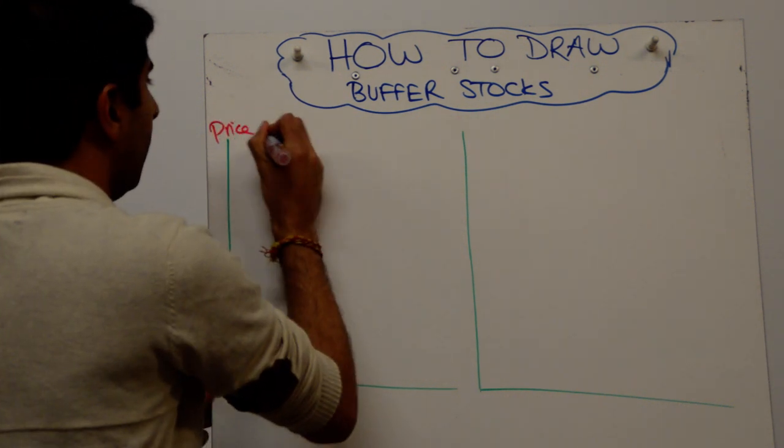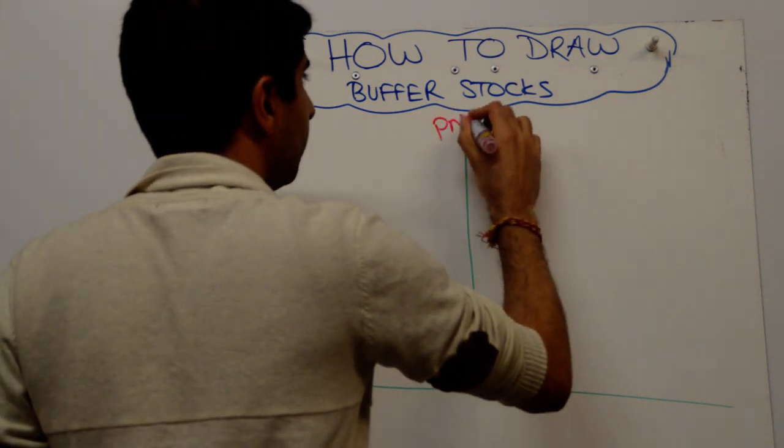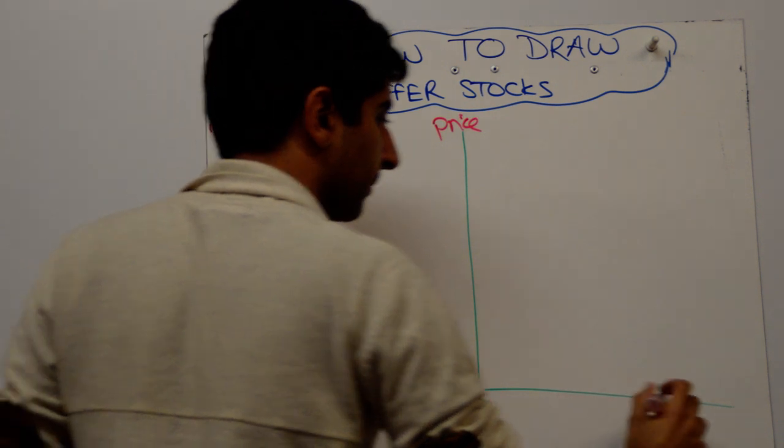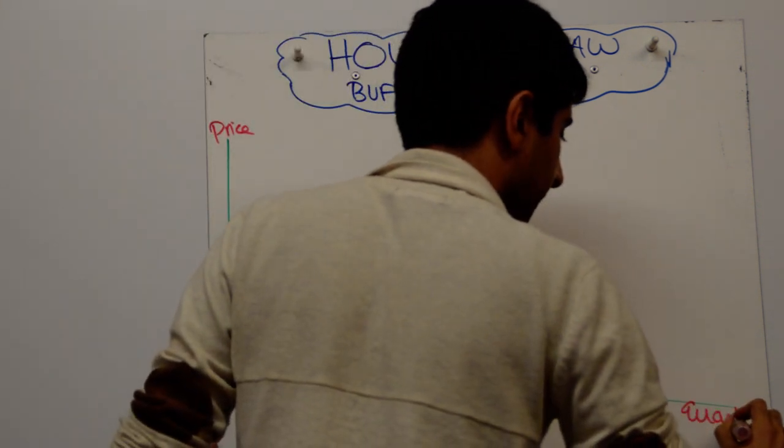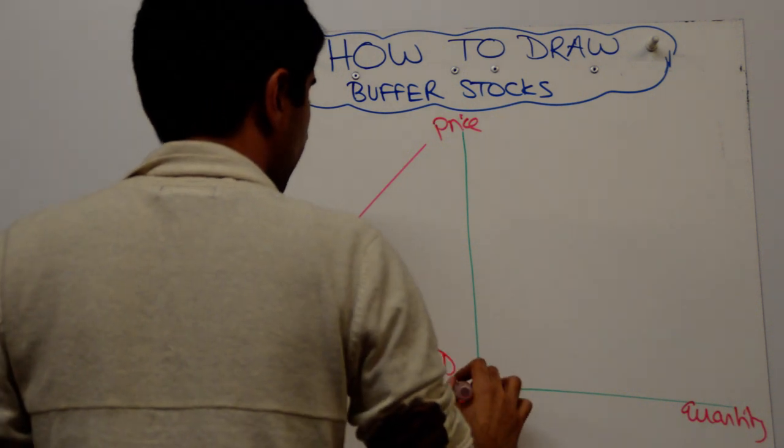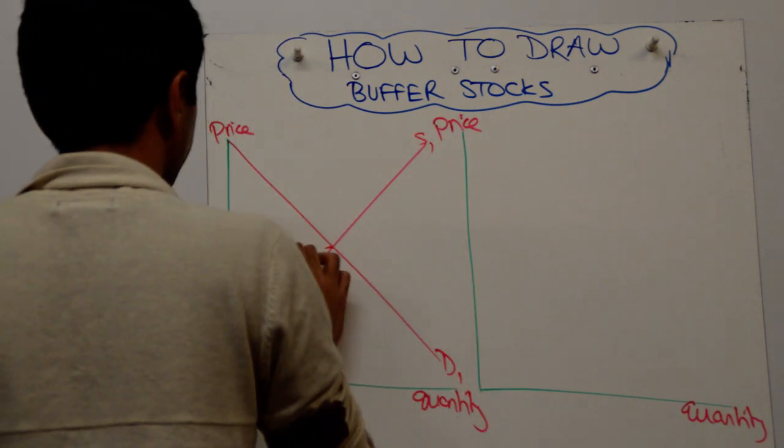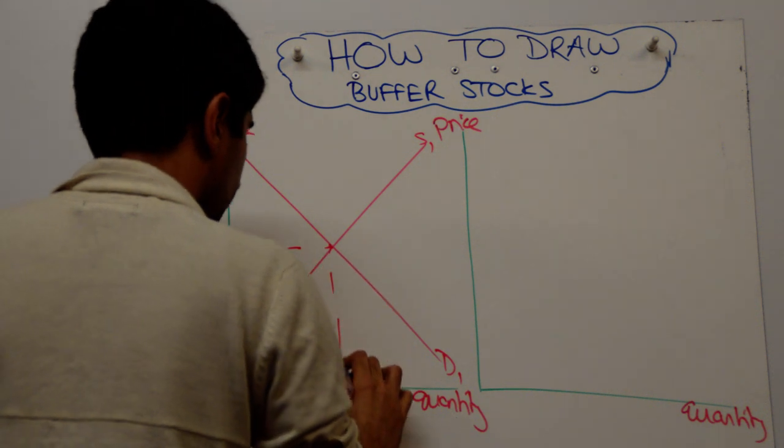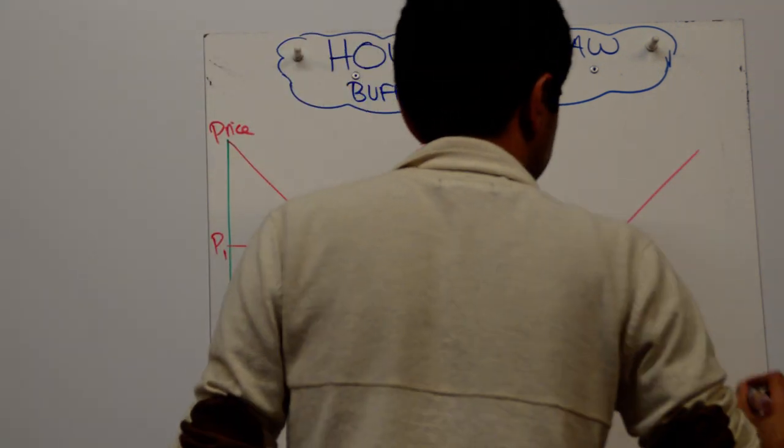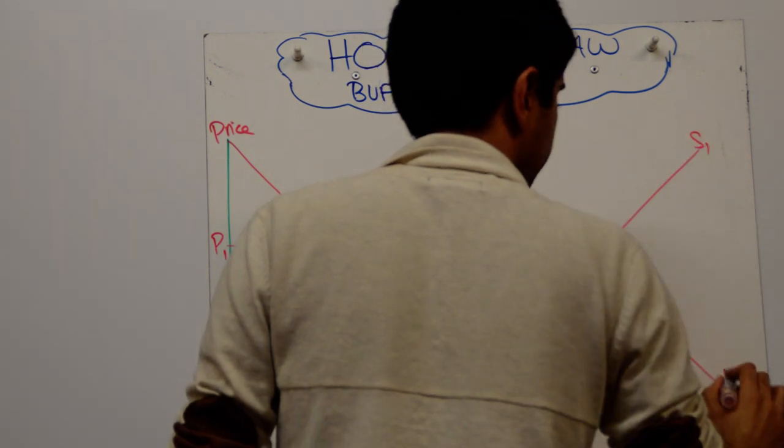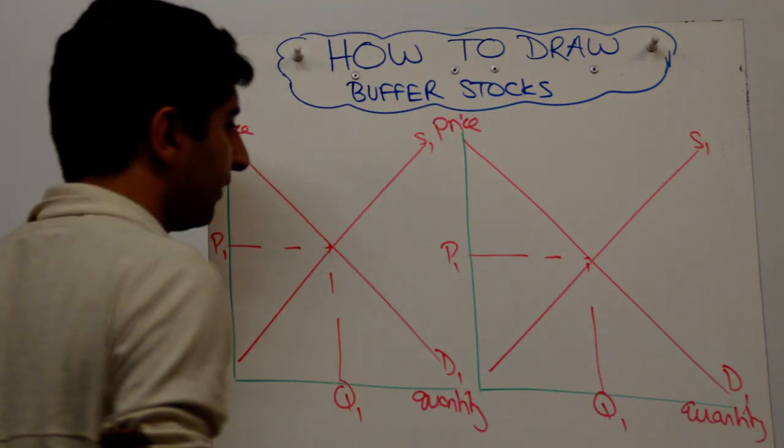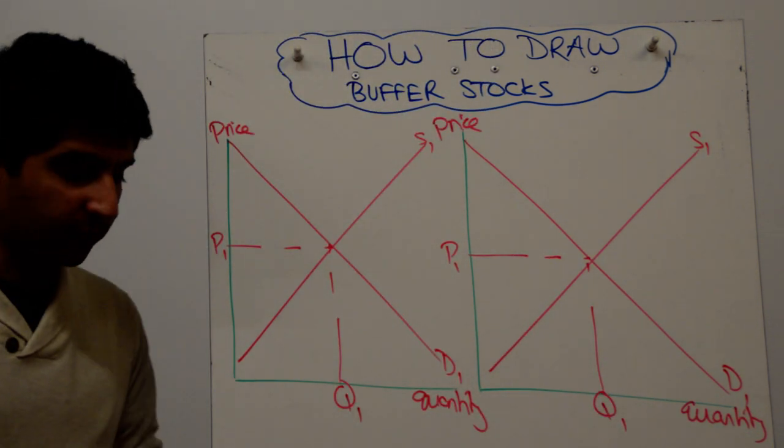So let's show price on the y-axis on both diagrams and quantity on the x-axis on both diagrams. You want to show equilibrium in both and what you're trying to do is on both diagrams show the same starting price. So P1 and Q1 here and the same idea on this one. So you can see that I've got the same price on both diagrams. That's a good start.